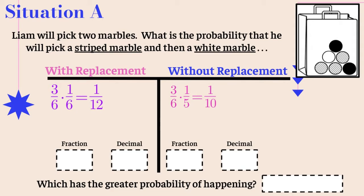Now we fill in our fractions and decimals to see which has the greater probability. The fraction for with replacement is one twelfth, which as a decimal is 0.083 repeating. The fraction for without replacement is one tenth, which as a decimal is 0.1. Since 0.1 is greater than 0.083, without replacement gives us the better probability.